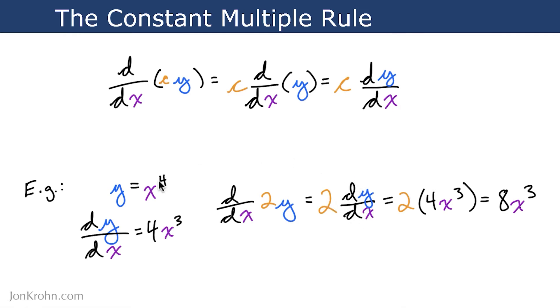Well, we already know that dy dx is equal to 4x cubed, in this case where y is equal to x to the power of 4. So we can simply drop in 4 dy dx, this 4x cubed value.